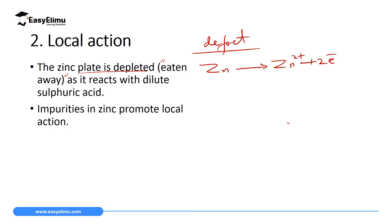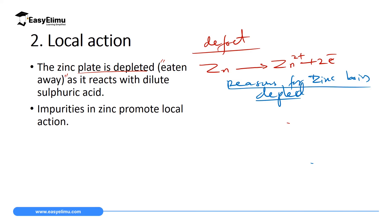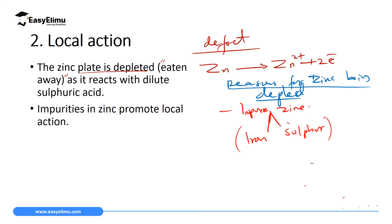Local action happens because zinc has impurities. If zinc were pure it could never be depleted, but impure zinc has two main impurities: iron impurities and sulfur impurities. These impurities are the ones which react with the acid and make local action take place, causing the zinc to be depleted very fast.